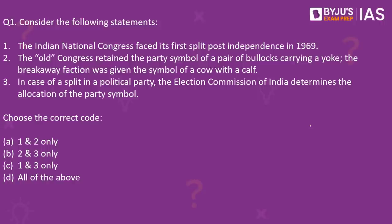Let's begin our daily quiz with question number one. Consider the following statements. Number one: the Indian National Congress faced its first split post-independence in 1969. Second: the old Congress retained the party symbol of a pair of bullocks carrying a yoke, while the breakaway faction was given the symbol of a cow and a calf. Third: in case of a split in a political party, the Election Commission of India determines the allocation of the party symbol. Which of these statements is or are correct? The correct answer is D.